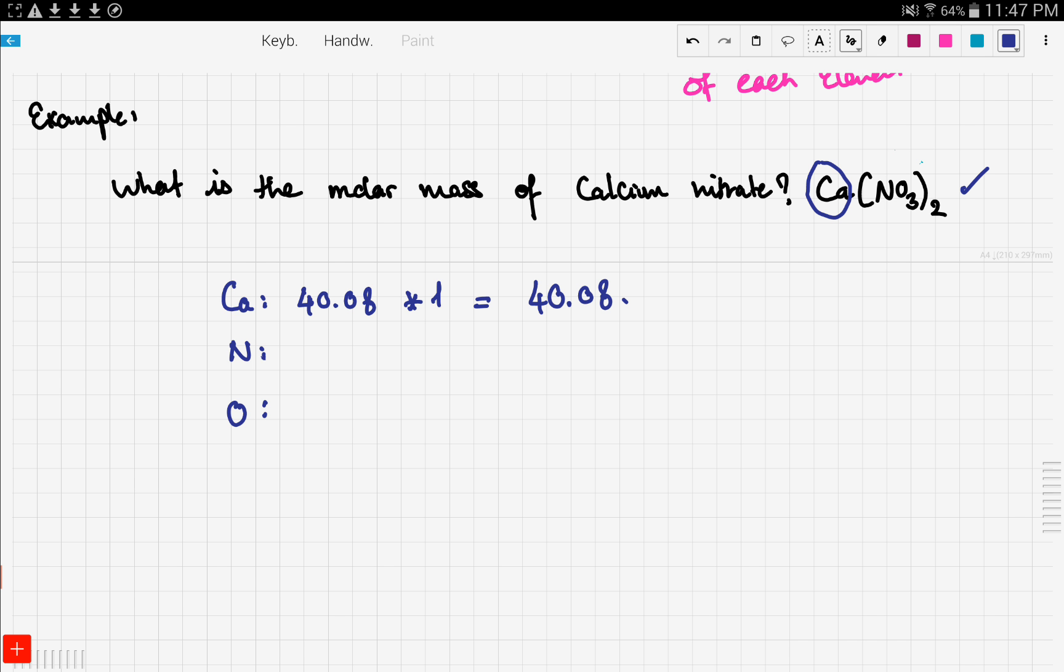Now let's move on to nitrogen. And notice this we have a bracket. So this two is distributed inside. So therefore we have two nitrogens. And we go to our periodic table and we find the atomic mass. And we're gonna find it to be 14.01. And we have two of that. So we get 28.02.